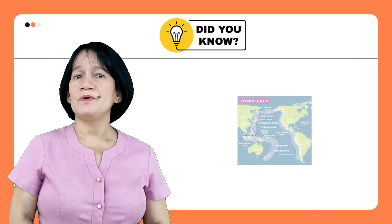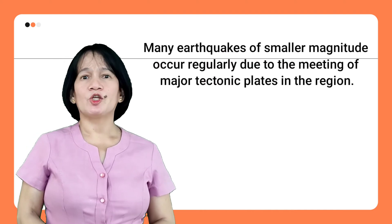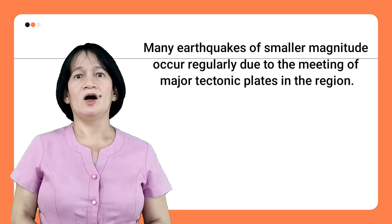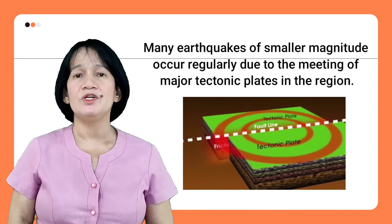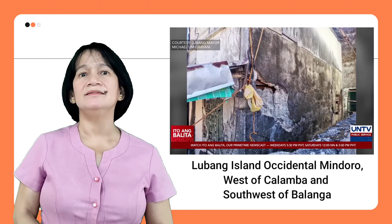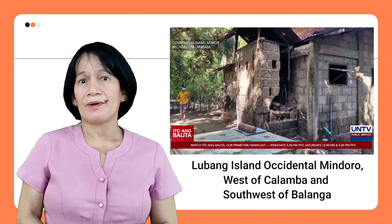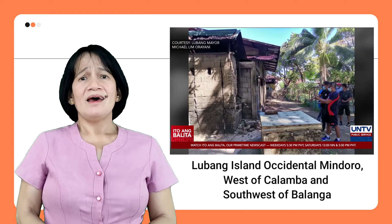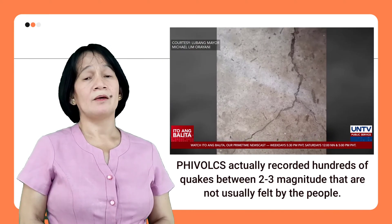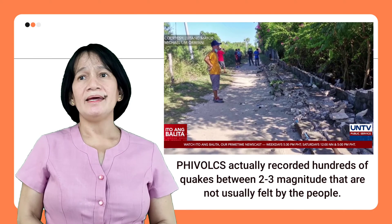The Philippines lies along the Pacific Ring of Fire, which is why the country experiences frequent seismic and volcanic activity. Many earthquakes of smaller magnitude occur regularly due to the movement of major tectonic plates in the region. Just recently, we felt an earthquake that happened in Lubang, west of Kalama, and southwest of Palawan. Shaking was felt across the region. PHIVOLCS actually recorded hundreds of earthquakes between magnitude two to three that are not usually felt by people.